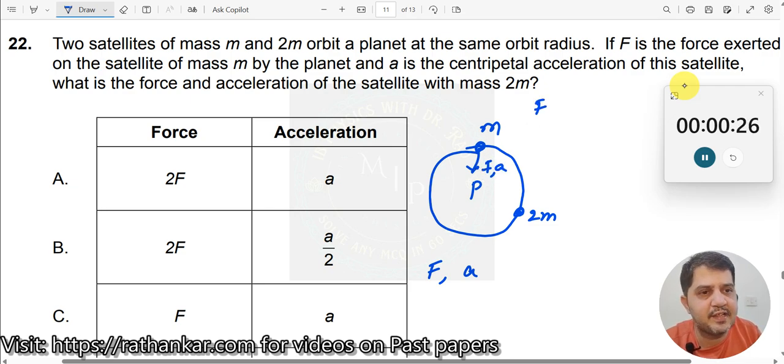What is the force acting on it? The force acting on this one is MV squared divided by R. And what is the force acting here? F prime is equal to 2M times V squared by R. So therefore, F prime becomes 2 times F.